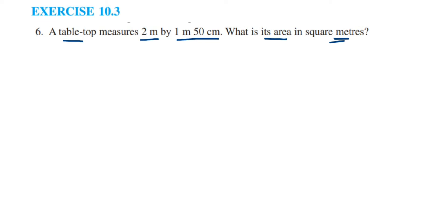The table-top is in the shape of a rectangle because you can see here length and breadth are different. If they were the same, it would be a square. Since they are different, we have to use the area of rectangle formula.